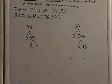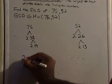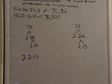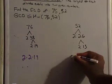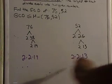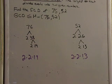And then now let's write down all the prime factors that are in common. So for 76 we got 2, 2, 19. For 52 we got 2 times 2 times 13. Remember these right here are the prime factorization.